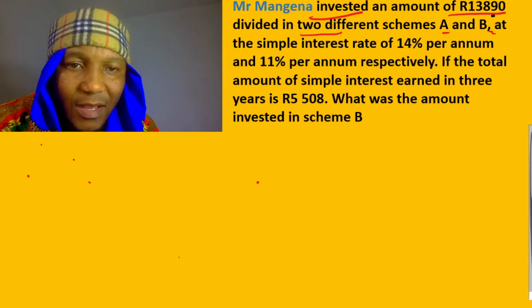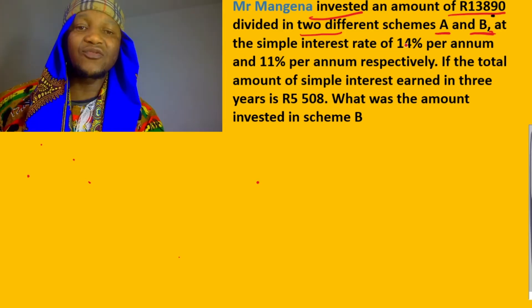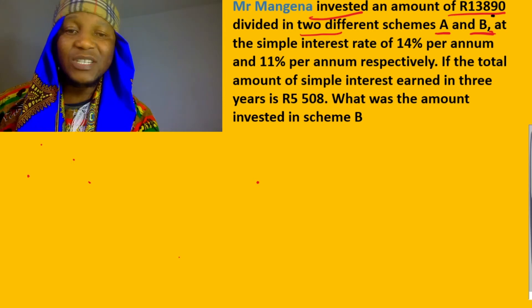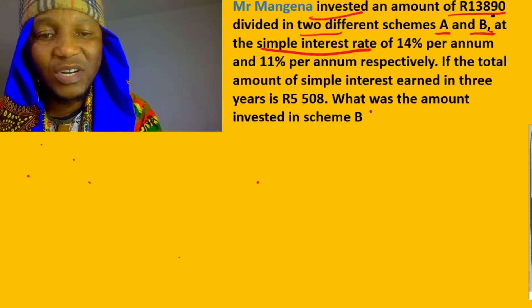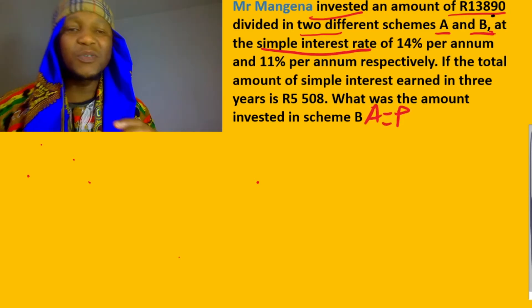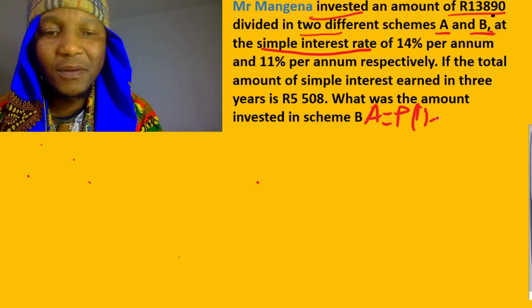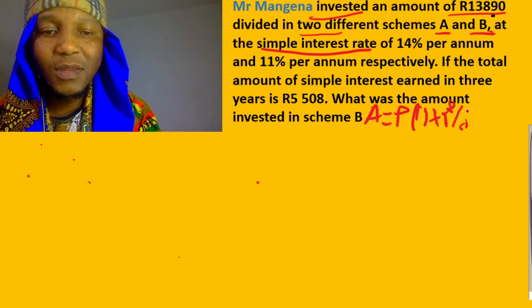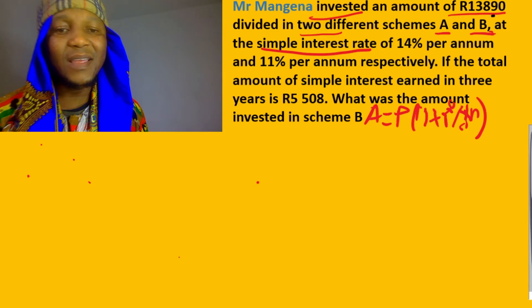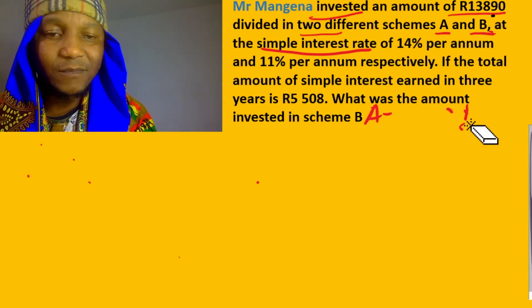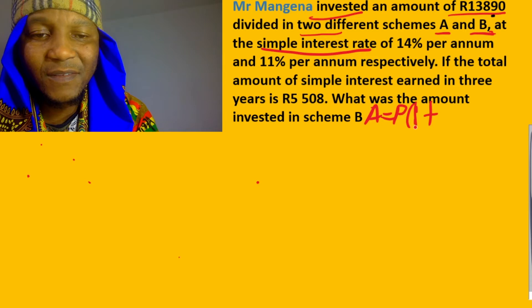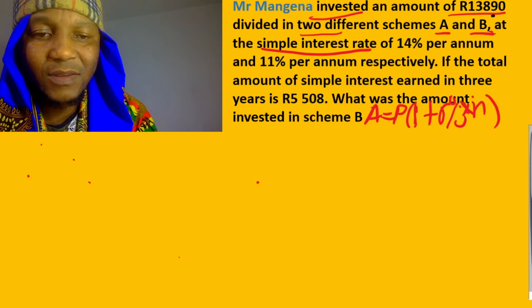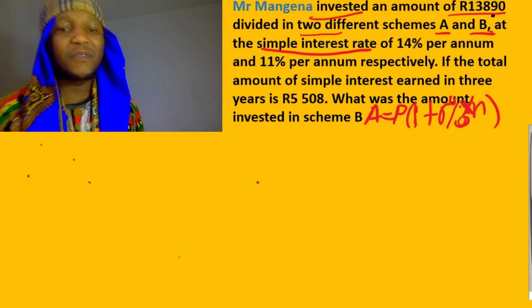He invests in Scheme A and Scheme B at a simple interest rate - pay attention, there's compounded and simple interest. For this case it's simple interest. The formula for simple interest is: Amount equals Principle times (1 plus interest rate percent times number of years).